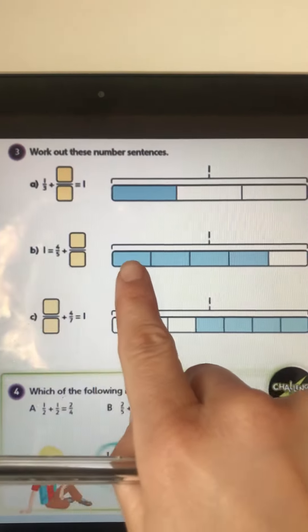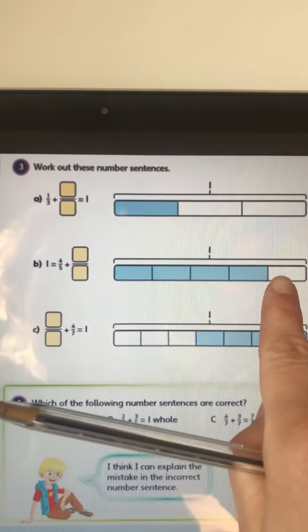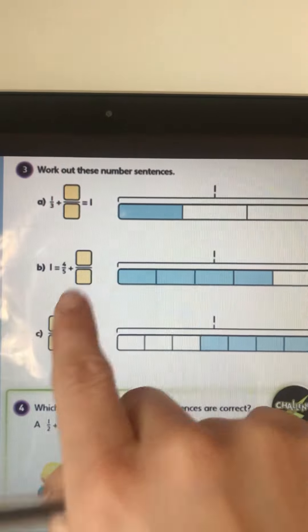Okay, the next one, one equals, those are our four fifths, they're colored in, so what's left? Only one, so one fifth would go in there.